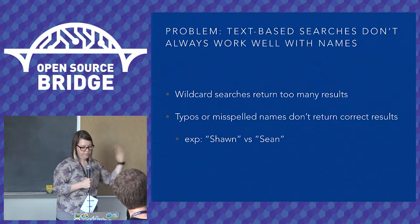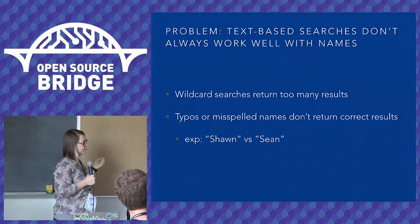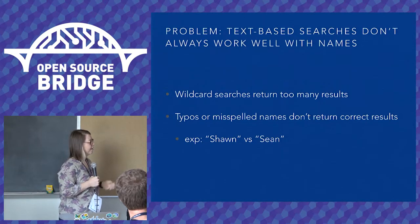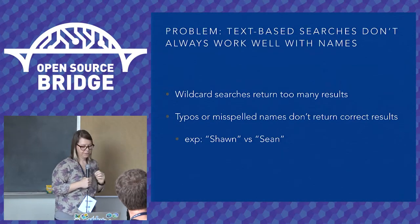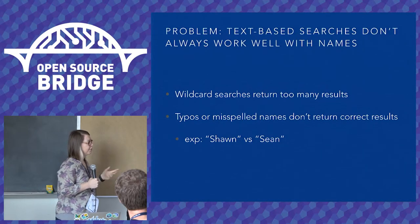For example, Sean versus Shawn — these are pronounced the same in English but spelled very differently. A text-based search isn't really going to work well for that.